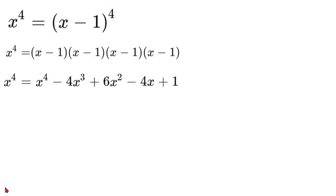Now what we're going to do next is subtract our x to the power of 4 and move it over. So we'll have negative 4x cubed plus 6x squared minus 4x plus 1 is equal to 0.